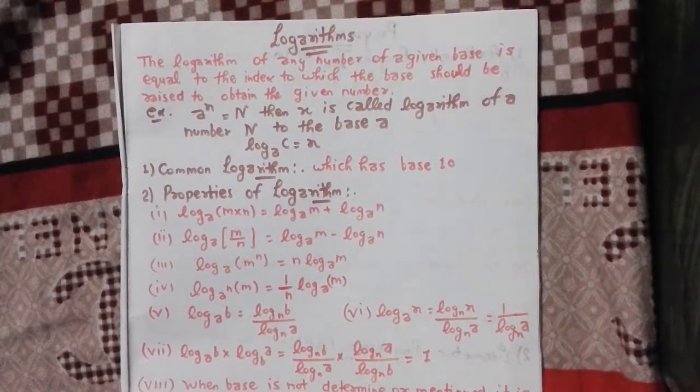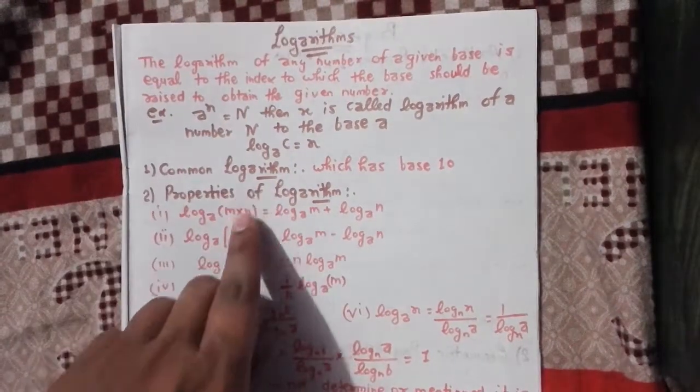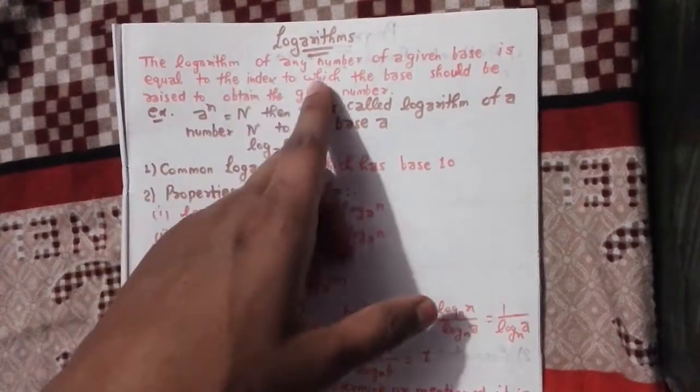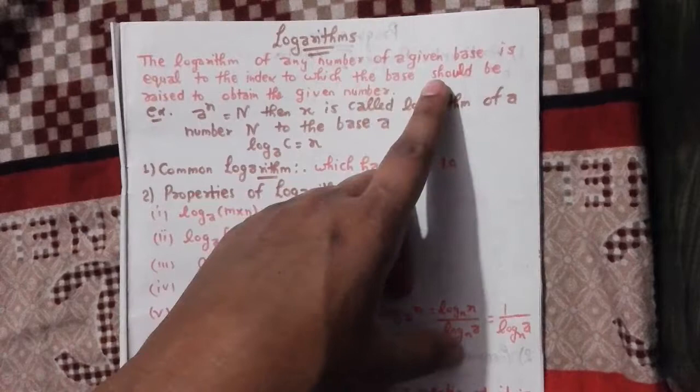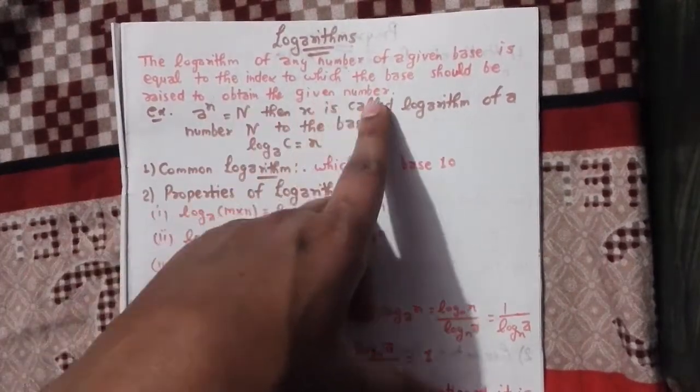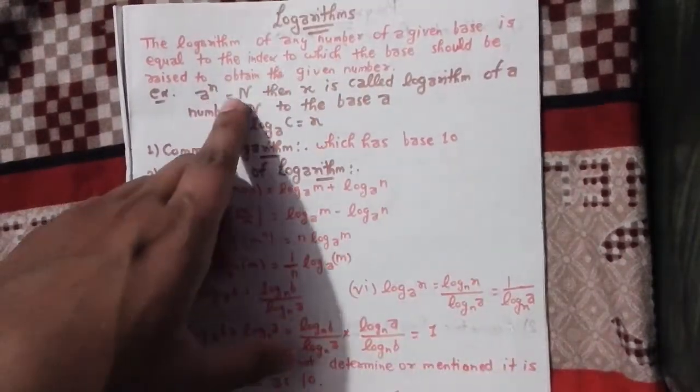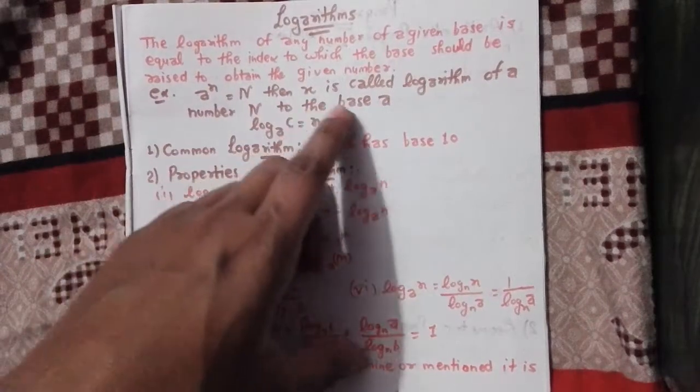Today our topic is logarithm. First, we will know what logarithm is. The logarithm of any number of a given base is equal to the index to which the base should be raised to obtain the given number. Or, if a^x equals n, we will call x